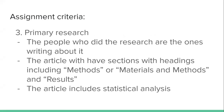Primary research means that the people who wrote the article are the same people who did the research they're writing about. When you look at an article about primary research, you'll see sections with headings like methods, where the authors talk about how they designed the research, and a section called results, where they show statistical analysis of the outcomes. If you don't see these headings in your article, it's probably not primary research.